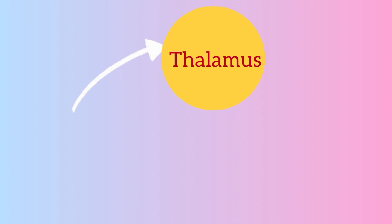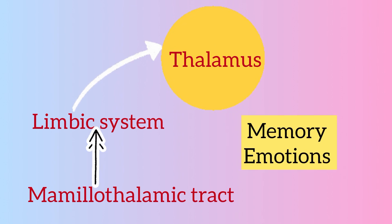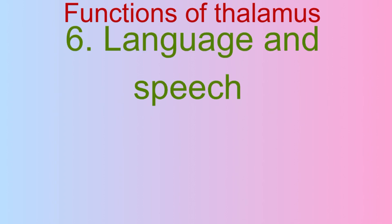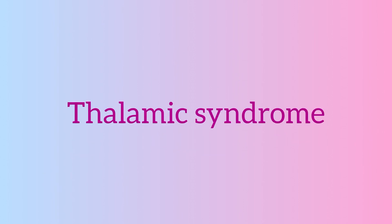The thalamus receives input from the limbic system via the mammillothalamic tract, through which it influences recent memory and emotions. Thalamus also plays an important role in generating the pattern of brain activity in the sleep-wake cycle. The dorsolateral nucleus is reciprocally connected with the parietal lobe and is concerned with language, speech, and complex integrated functions.